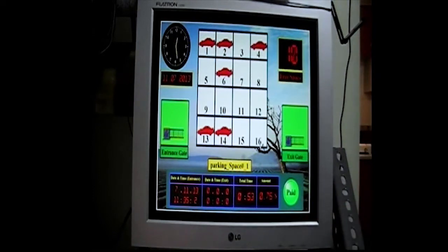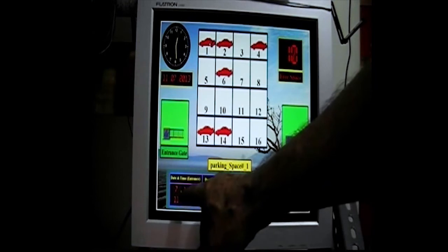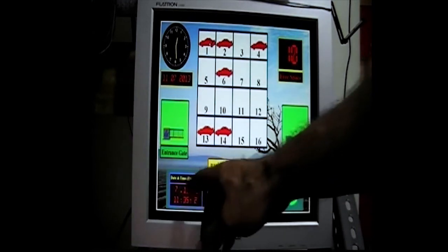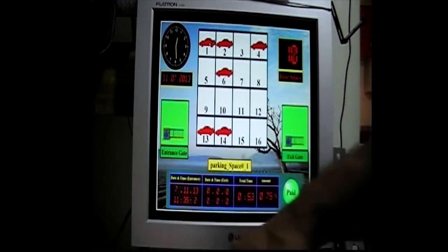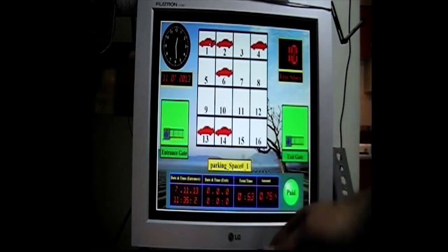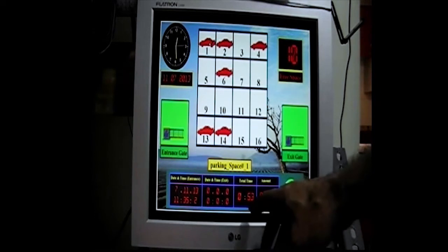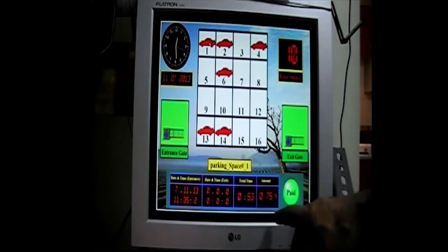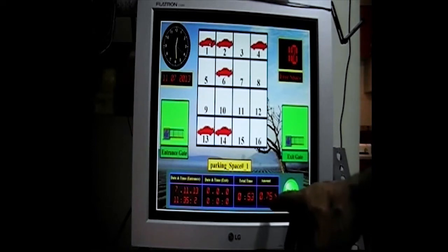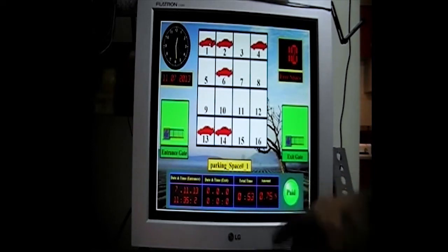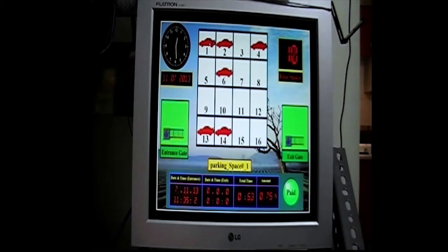The system is set up that when I click on any of these spots, like this, it tells me that this car came into the parking on this date and time. It still is in the parking lot. The amount of time this car is parking over there is about 53 minutes. So far, the driver has to spend 75 cents when he is getting out of the parking.